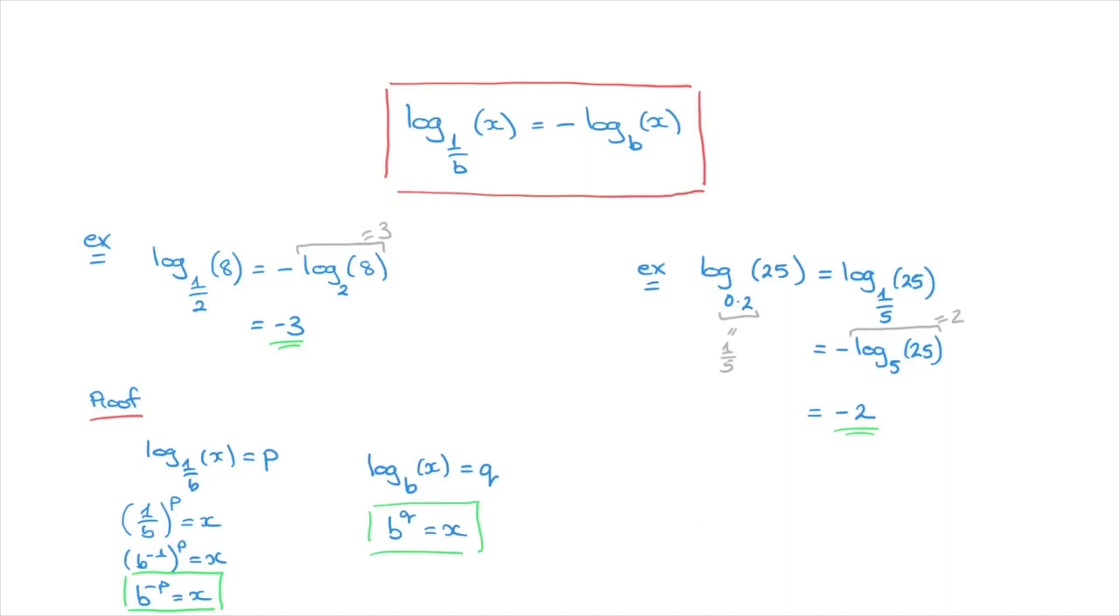Now looking at these two results, we can see that both of their right-hand sides are equal to x. Consequently, both of their left-hand sides must be equal. In other words, we can go ahead and write b to the power of negative p equals b to the power of q. Since both sides of this equation are written as powers of b, we can get rid of the b's altogether and state that negative p equals q.